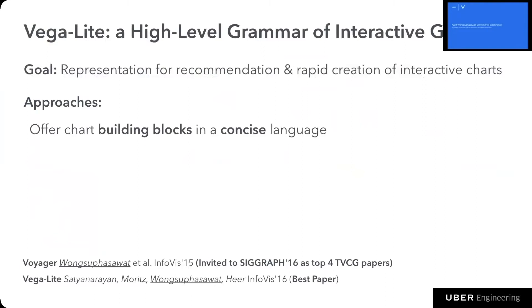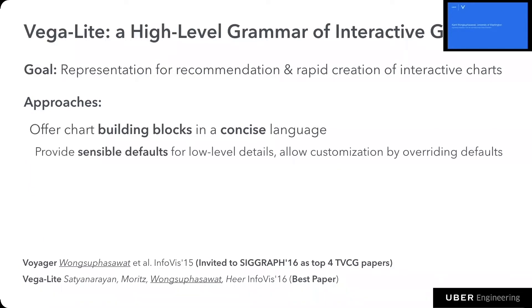To support this goal, VegaLite offers chart building blocks in a concise language. To achieve concision, we automatically generate sensible defaults for low-level details, but allow users to customize their plots by overwriting these defaults. VegaLite provides a universal JSON format to describe visualizations, and a JavaScript library to convert JSON specifications into visualizations.